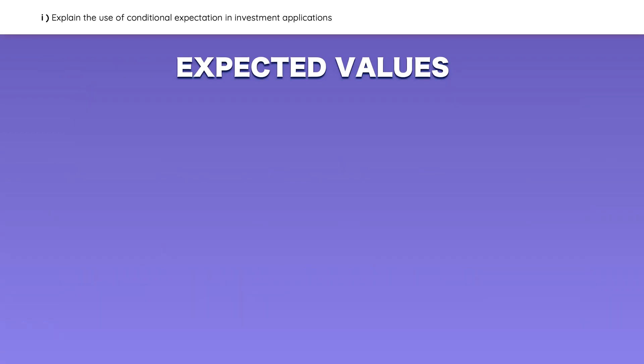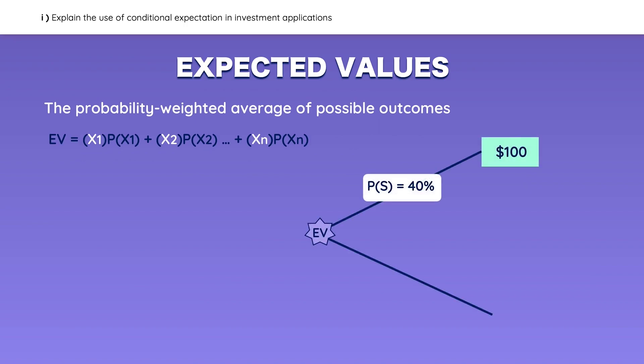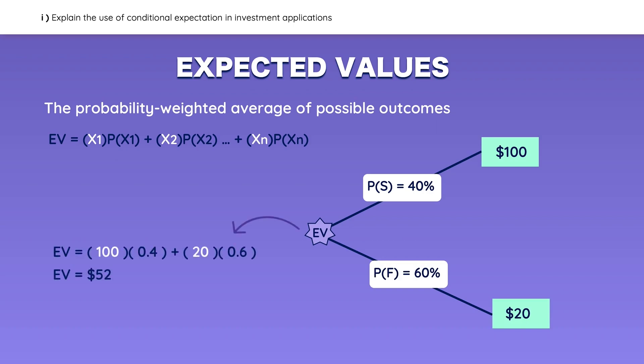Expected values are basically the probability-weighted average of possible outcomes. For example, if there is a 40% chance that you'll make $100 and a 60% chance that you'll make $20, just multiply each outcome by its corresponding probability to get the expected value. In this case, the expected value is equal to a $52 profit.